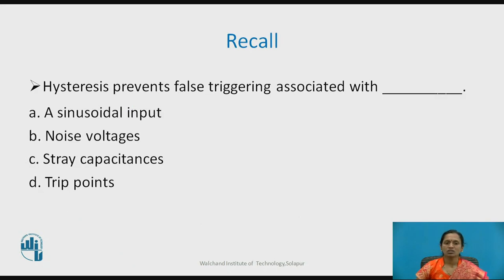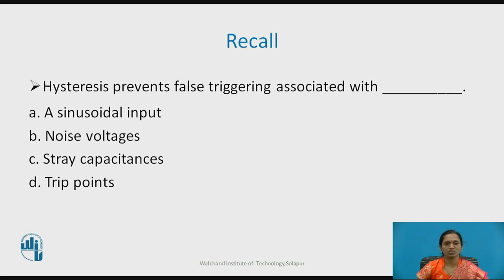Now recall the concept of hysteresis and identify the correct option: hysteresis prevents false triggering and is associated with which of the following — sinusoidal input, noise voltage, stray capacities, or trip points? Hysteresis means the output voltage direction changes, giving a change in the direction of the signal. It is associated with noise voltage, which is why the Schmitt trigger is very important for filtering out noise signals. The correct answer is noise voltage.